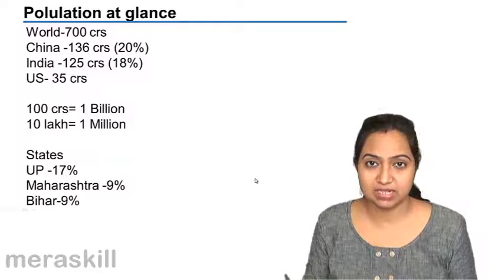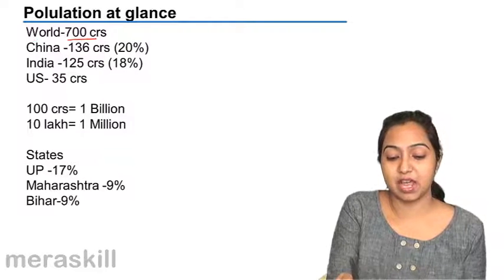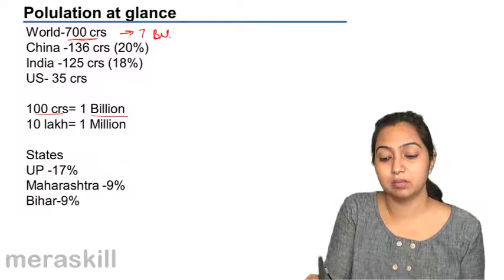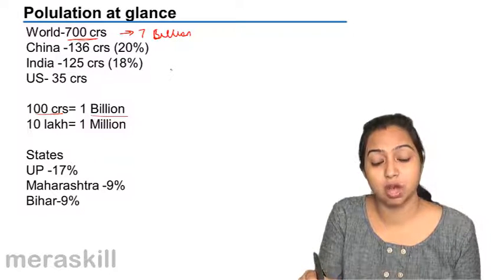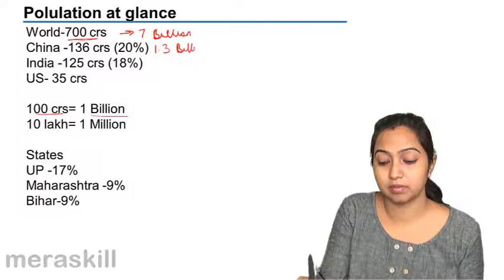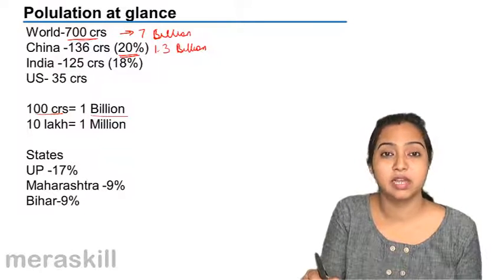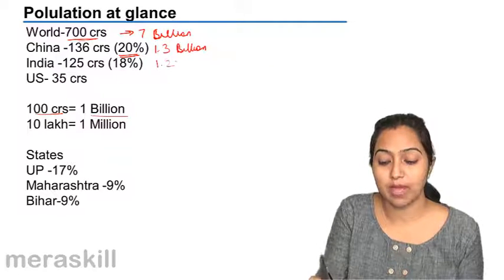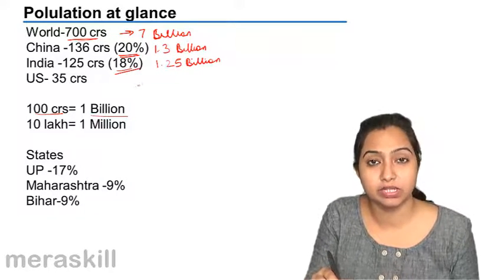Before we start, let's have a glance at the population. The world population is 700 crores — 100 crores is 1 billion — so in other words, the world population is 7 billion. China is the most populated country with a population of 1.3 billion or 136 crores, constituting 20% of the world population. India comes second with a population of a whopping 125 crores or 1.25 billion, and we constitute 18% of the world's population.